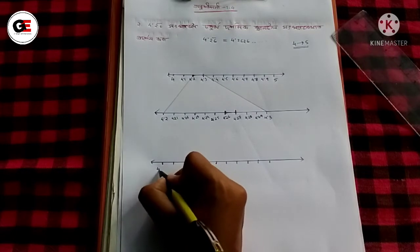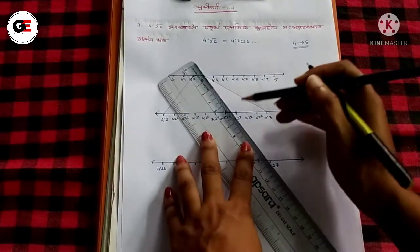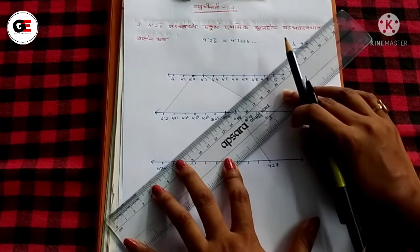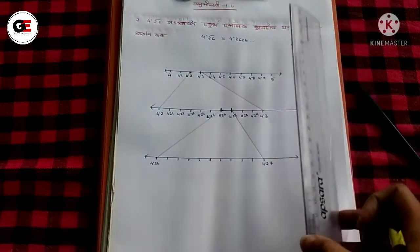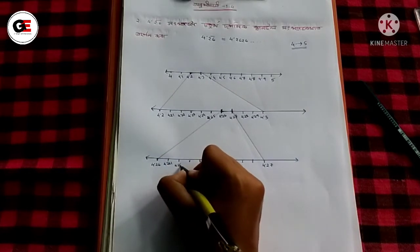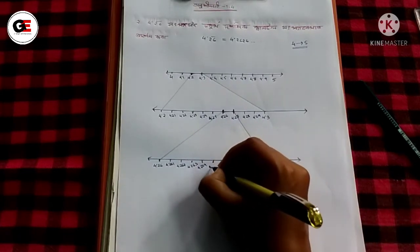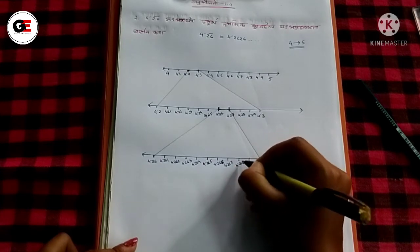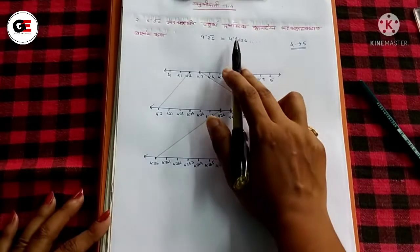Step 1: We will draw the number line and locate 4.26. We draw from 4.27 down to 4.26, then further to 4.269 and 4.26 into a sub-interval of 4.26.